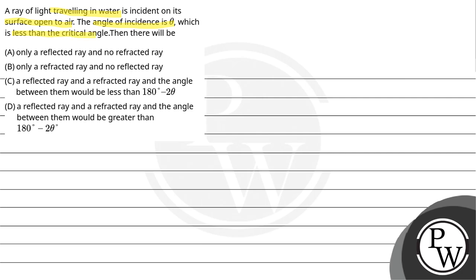Then there will be option A only a reflected ray and no refracted ray. Option B only a refracted ray and no reflected ray. Option C a reflected ray and refracted ray and angle between them would be less than 180 degree minus 2 theta. Option D a reflected ray and refracted ray and angle between them would be greater than 180 degree minus 2 theta.